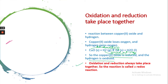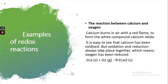So we can say oxidation and reduction always take place together. This reaction is called a redox reaction. When both oxidation and reduction reactions occur simultaneously, this process is known as a redox reaction. Let's see another example: the reaction between calcium and oxygen.